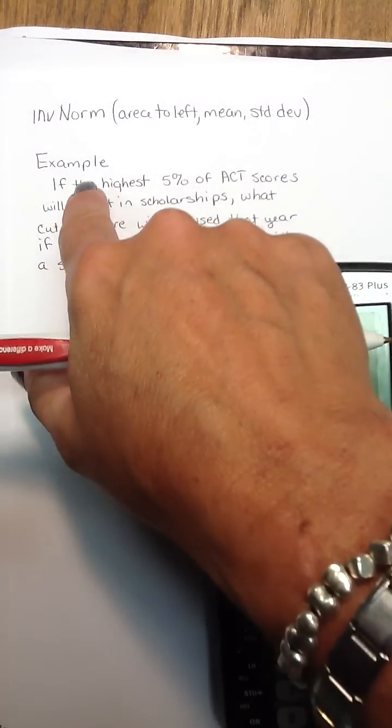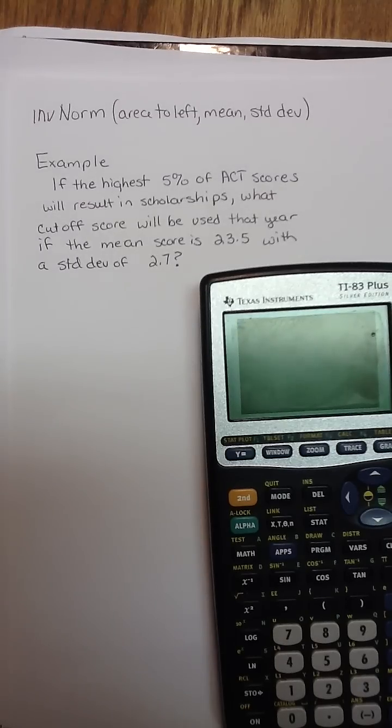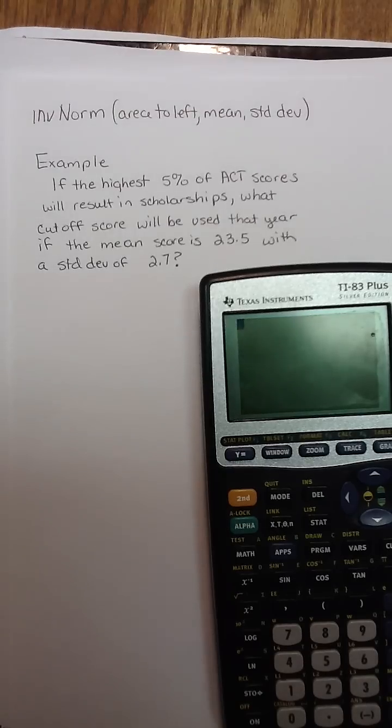We are given this example: if the highest 5% of ACT scores are going to result in their recipient getting a scholarship, what cutoff score would be used that year if the mean score is 23.5 and a standard deviation of 2.7?